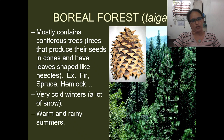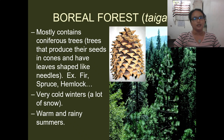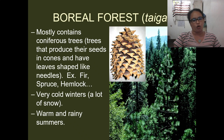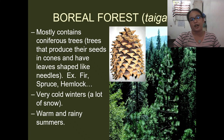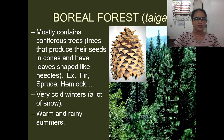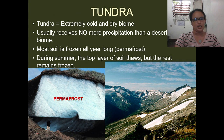Now we will talk about the boreal forest, or taiga. This is another forest found in temperate regions. It mostly contains coniferous trees — trees that produce their seeds in cones and have needle-shaped leaves, like firs, spruce, and hemlock. This forest has very cold winters and warm, rainy summers.